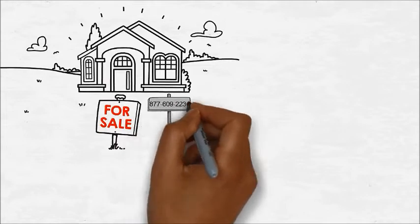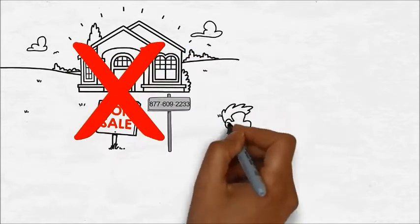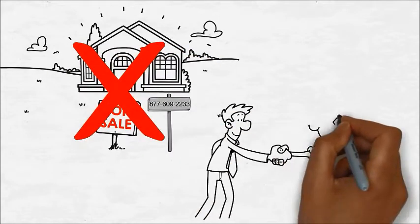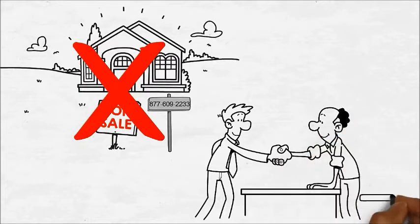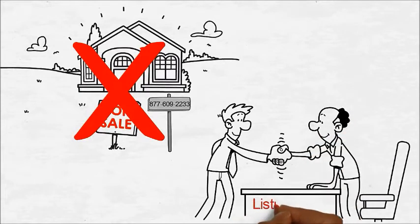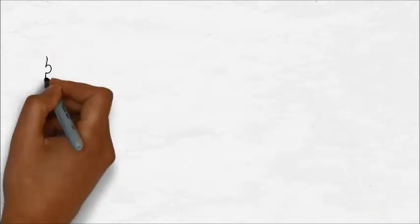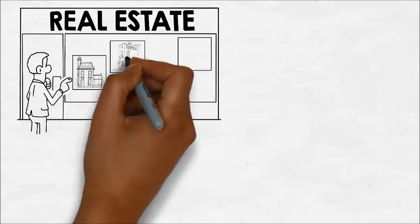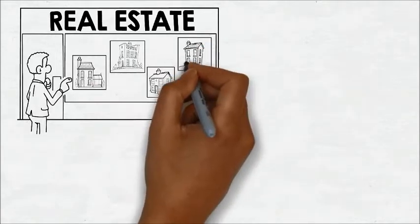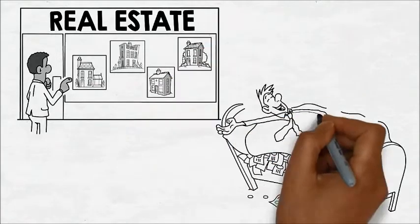You never want to call the agent on the side. A listing agent's natural allegiance is to the seller due to their already existing relationship as well as the legal and binding listing contract that they have with the seller. That listing agent is also going to be highly motivated to convince you to buy their listing so that they can double their commission from both sides of the sale.